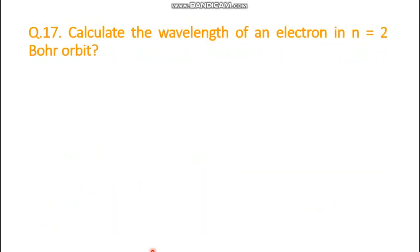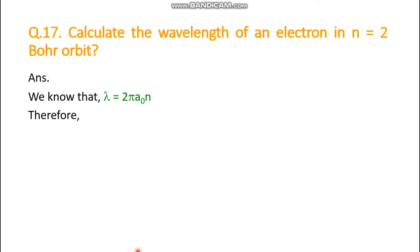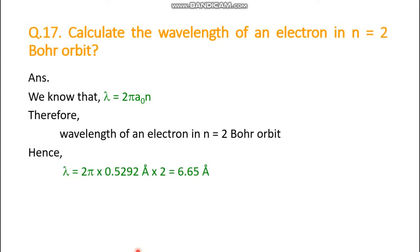One more problem: calculate the wavelength of an electron in the n = 2 and n = 4 orbits. Using λ = 2πa₀n, with a₀ = 0.5292 angstrom and n = 2, the overall result is 6.65 angstrom. This way you can find the wavelength of the electron at any orbit. That's all for today's lecture. Thank you and have a nice day.